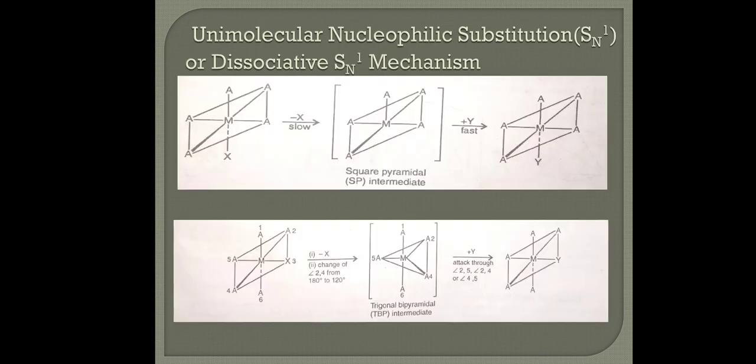These are the two possible intermediates which can form in unimolecular nucleophilic substitution mechanism. In the first, you can see a six-coordinated octahedral complex in which X slowly removes, goes out of the system and gives a square pyramidal intermediate. Then Y substitutes in its place, which is a fast step, and gives a new complex.